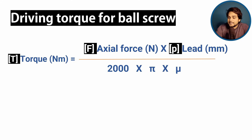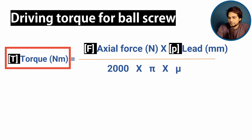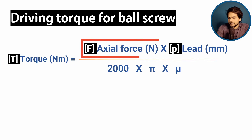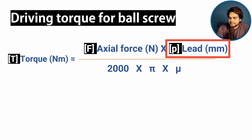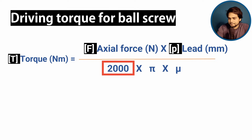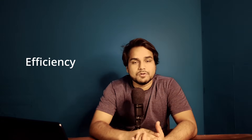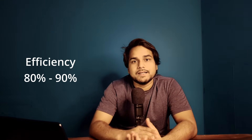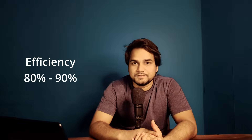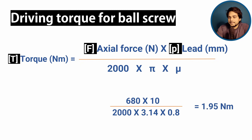We can calculate the driving torque using this formula. The driving torque is in Nm, F is the axial force in N, P is the size of lead in mm, 2000 is a conversion factor, and pi is a constant with value 3.14. The efficiency for a ball screw we can consider as 80% to 90%. Putting in the values, the driving torque becomes 1.95 Nm.